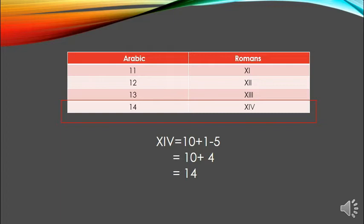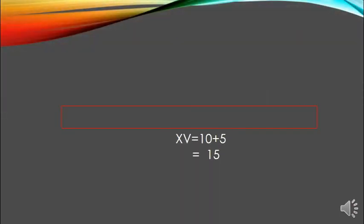Here we apply rule number 1. What is rule number 1? Subtract smaller from greater. So V minus I: 5 minus 1 equals 4, and X equals 10, so 10 plus 4 equals 14. So XIV represents 14.